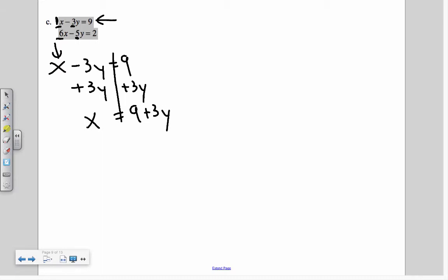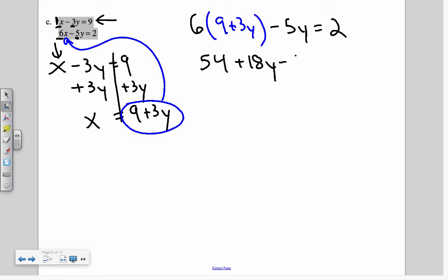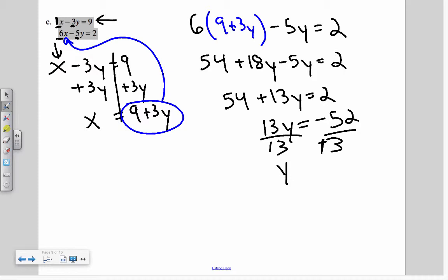Now that I have a variable alone, I'm going to take this variable and I'm going to plug it into the other equation in for the variable that I've solved for. So it becomes 6 times my 9 plus 3y minus 5y equals 2. You notice that there's only y's in that equation now. It means that now I can distribute. Which is 54 plus 18y minus 5y equals 2. So I'm left with 54 plus 13y equals 2. I subtract 54 on both sides. So I'm left with negative 52. So 13y equals negative 52. I divide by 13. Y equals negative 4.